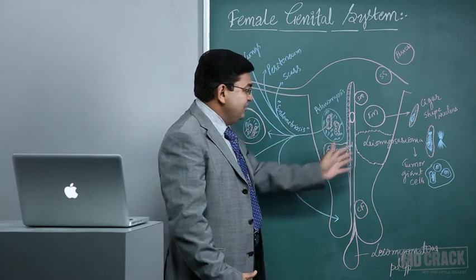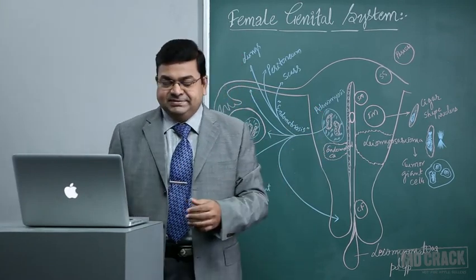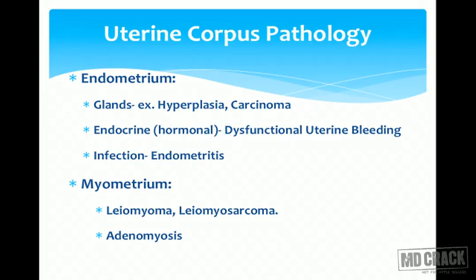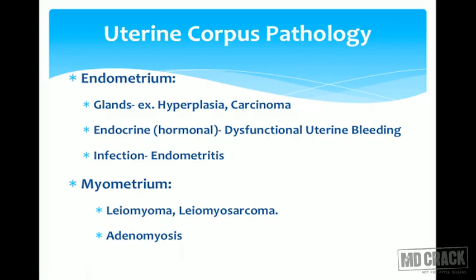Let us look at the endometrial pathological lesions. In the endometrium we will see hyperplasia of the glands, which we call endometrial hyperplasia, with types including simple and complex hyperplasia. There are also endometrial carcinomas, dysfunctional uterine bleeding (DUB), and inflammatory conditions such as tubercular endometritis, an important cause of infertility. For myometrial lesions, we have leiomyomas, leiomyosarcomas, adenomyosis, and endometriosis.